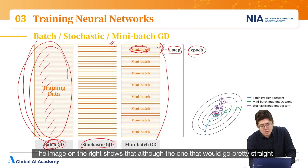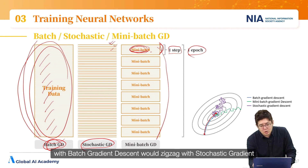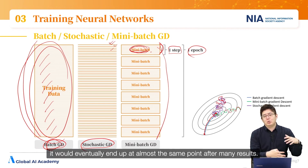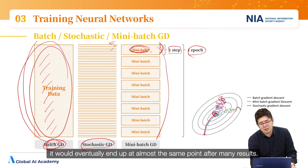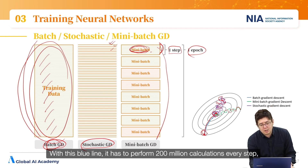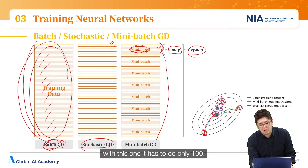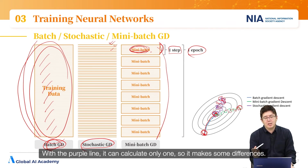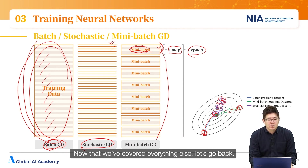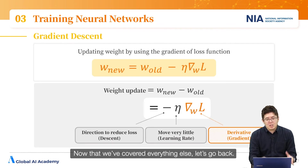The image on the right shows that while batch gradient descent would go fairly straight, stochastic gradient descent would zigzag, and mini-batch also zigzags — but it has been experimentally proved that all methods eventually end up at almost the same point. Batch gradient descent requires 200 million calculations every step, mini-batch requires only 100, and stochastic requires only 1. So it makes a difference — less accurate per step but goes much faster.